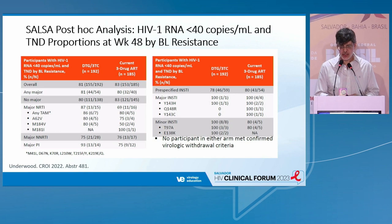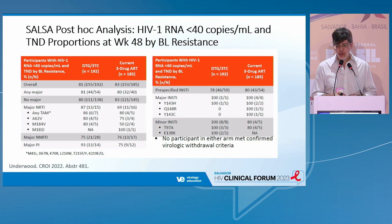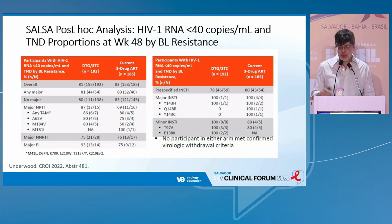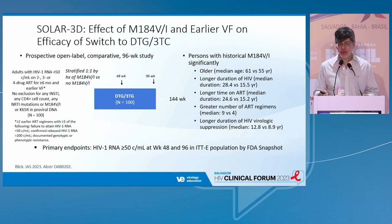SALSA did the same kind of analysis and found the same results. The number of patients with mutations for the analogue was about 15 patients, five of those with M184V. None had confirmed virological failure according to protocol — we had virological TNDs and virological blips. We even had an integrase mutation emerge, although switching to 3TC and dolutegravir did not fail.